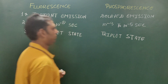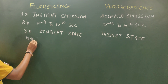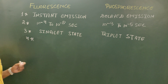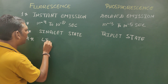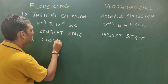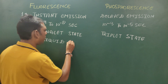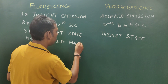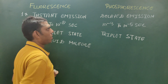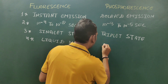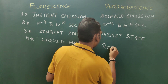The fourth difference: fluorescence is generally the property of a liquid sample or liquid molecule, whereas phosphorescence is the property of a rigid molecule.